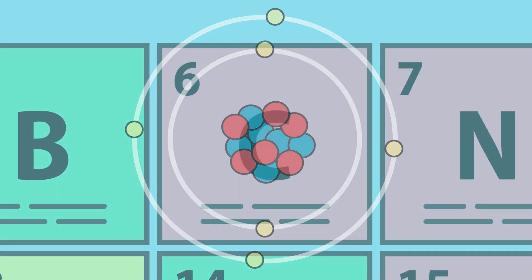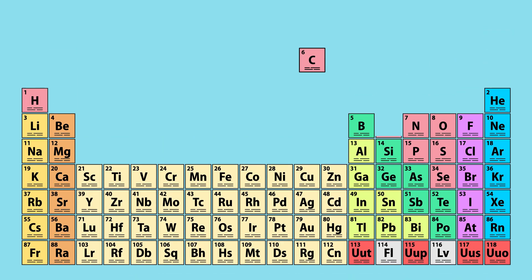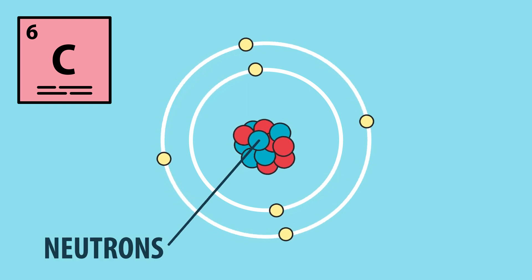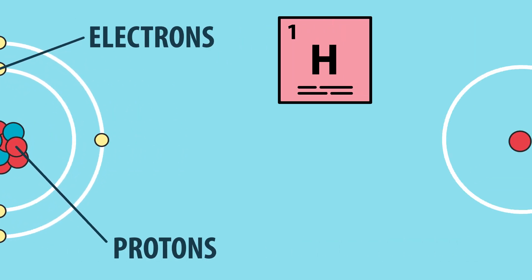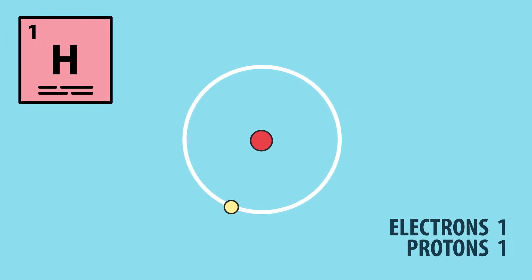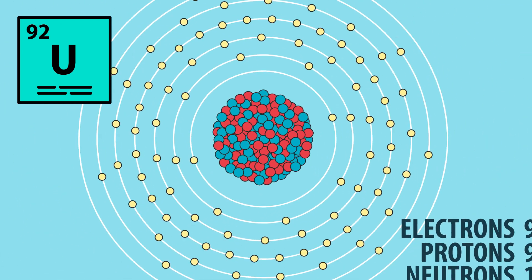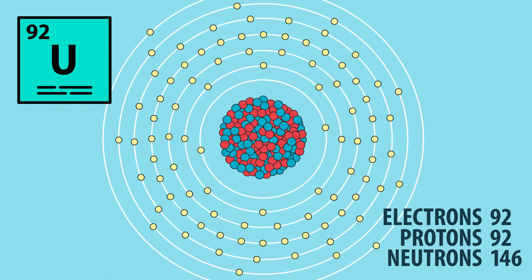The periodic table lists all of the atoms from lightest to heaviest, and all of the stuff around us is made up of these atoms. Atoms, in turn, are all made of the same stuff: neutrons, protons, and electrons. The lightest element, hydrogen, only has one proton and one electron, whereas a heavier element like uranium has way more particles, so it's denser and has more mass.